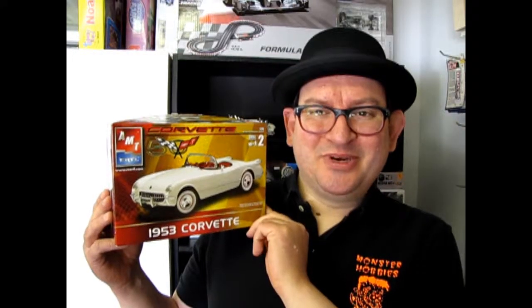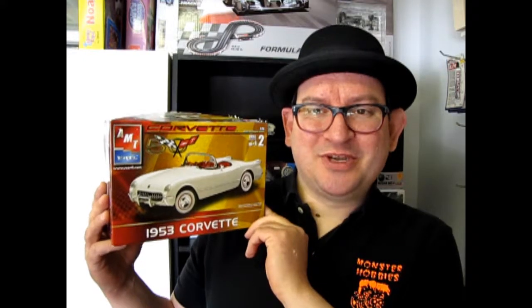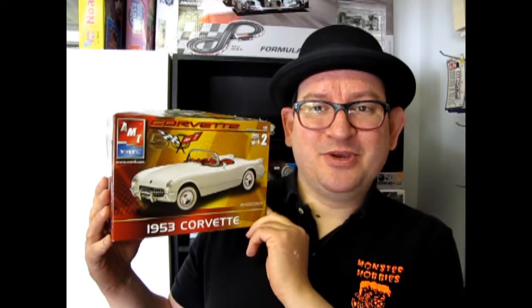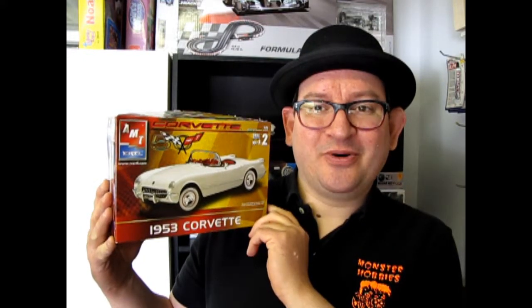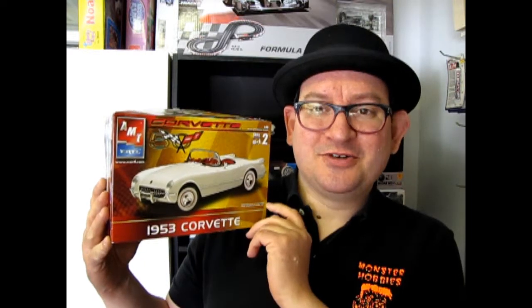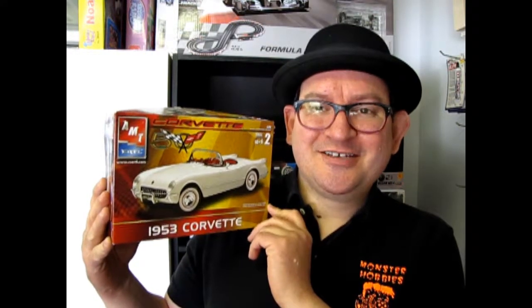Well I hope you enjoyed this episode of Monster Hobbies What's in the Box where we got to look at the '53 Corvette kit from AMT Ertl, one of America's first sports cars. So if you would like to check out some of our other car videos please click here, click here, and click down here. And don't forget to like and subscribe to us right here so I can continue to open up all my model kits at home. Anyway, we'll talk to you later, bye.